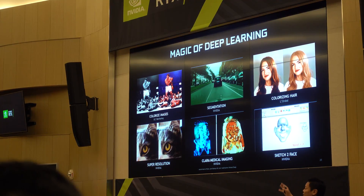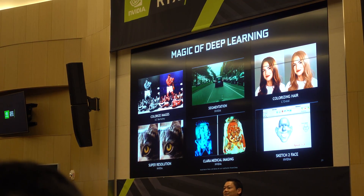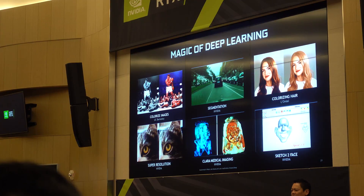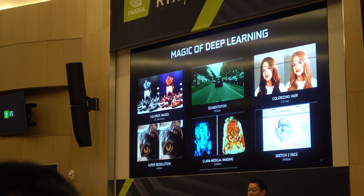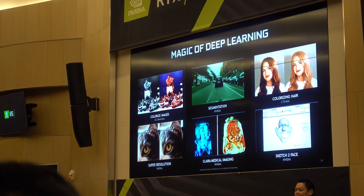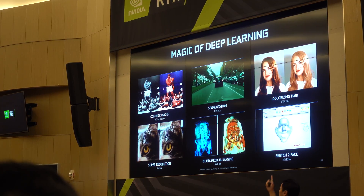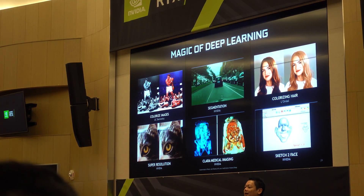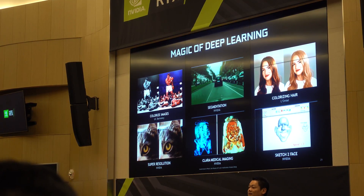People are using deep learning to take old black and white photos and make them look realistically colorized. Another application is segmentation — taking a basic, low-detail scene description and using AI to make it look like a real scene. A third example, done by L'Oreal, uses AI and deep learning to realistically simulate hair dye, so it looks like the person's hair color has actually changed.